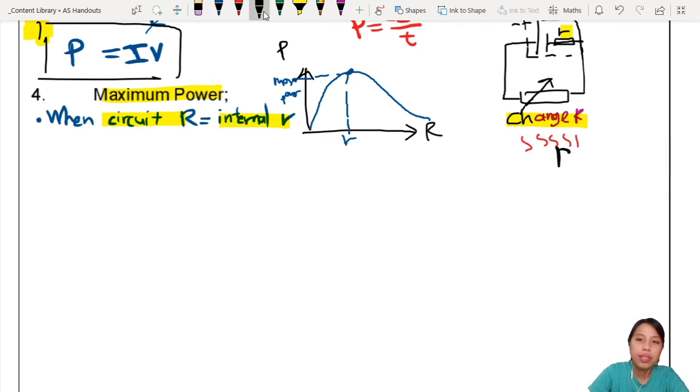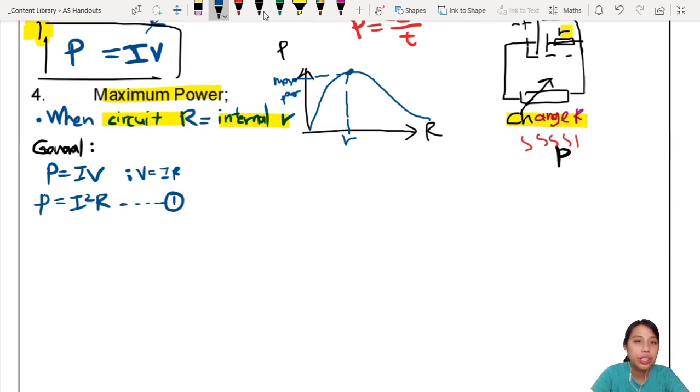First things first, you want to find the power dissipated by the resistor or the load, the circuit resistance. We need to think of the general formula. So general formula for power, you have P = IV. But we don't really want to know about V. I want to know about the current and the resistance, because I'm changing resistance. So I'm going to use P = I²R. I sub in V = IR. This is equation 1, the general equation to start off with.